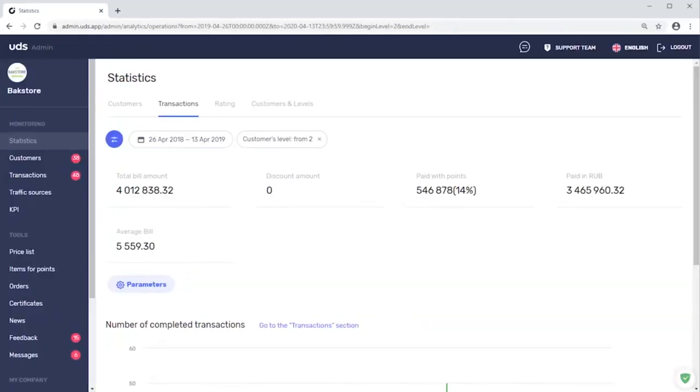And if we look at the total purchases on all levels of recommendations, starting from the second level, we see that the store sold almost 4 million rubles or $65,000 worth of products based solely on customer recommendations.